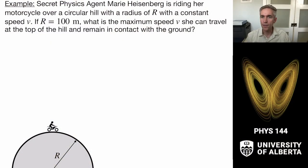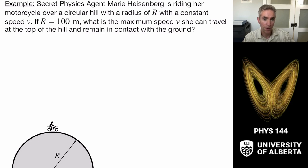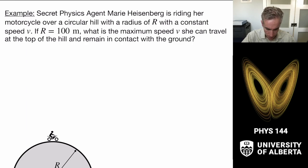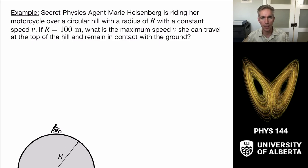Let's start out with a circular motion problem. This asks the question about secret physics agent Marie Heisenberg, who is riding her motorcycle over a circular hill. That circular hill has a radius of r, and we want to ask the question: what is the maximum speed v that she can travel at the top of the hill and remain in contact with the ground?